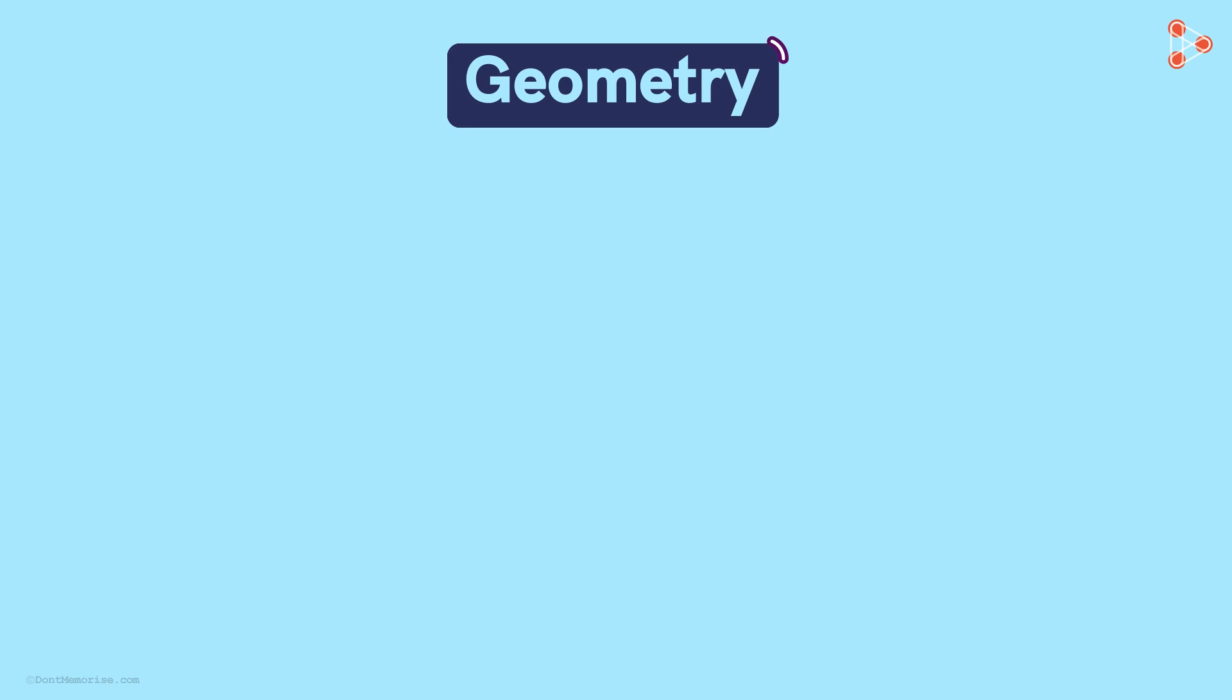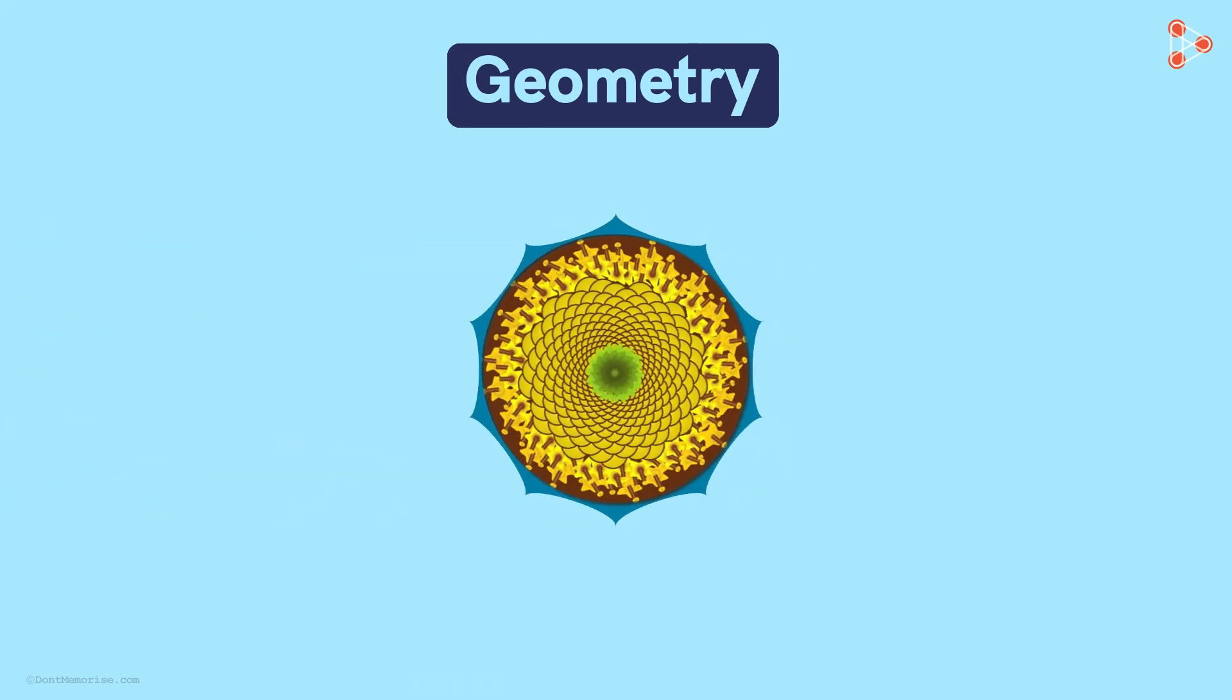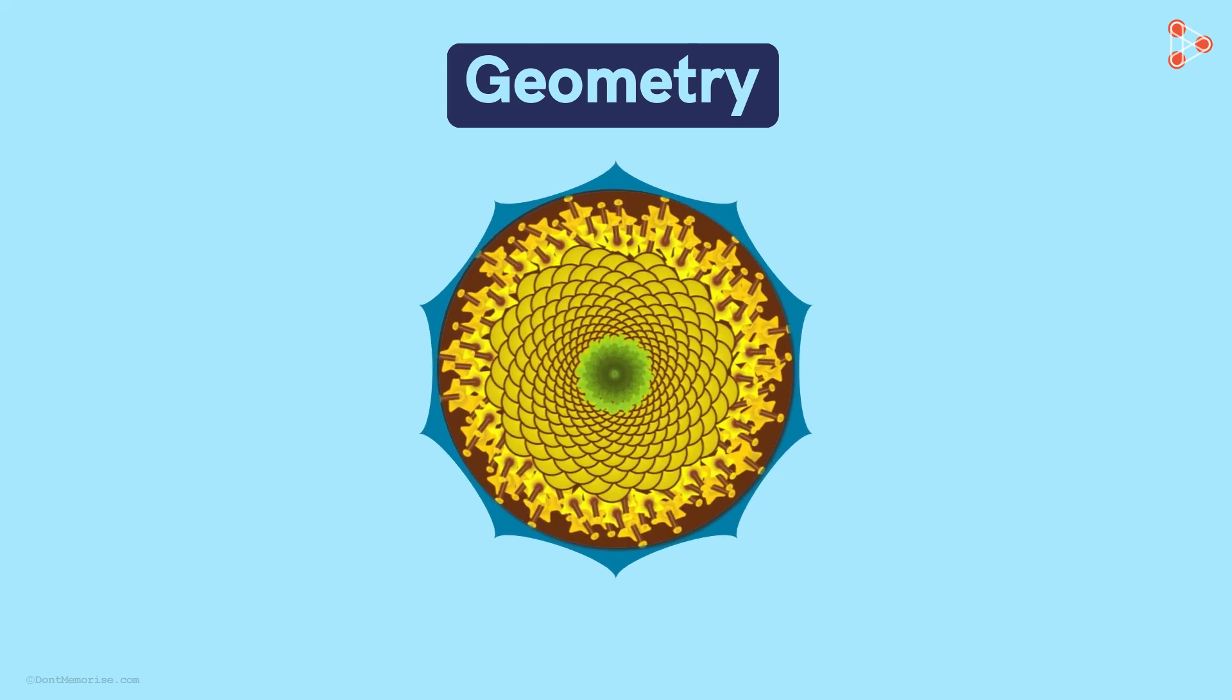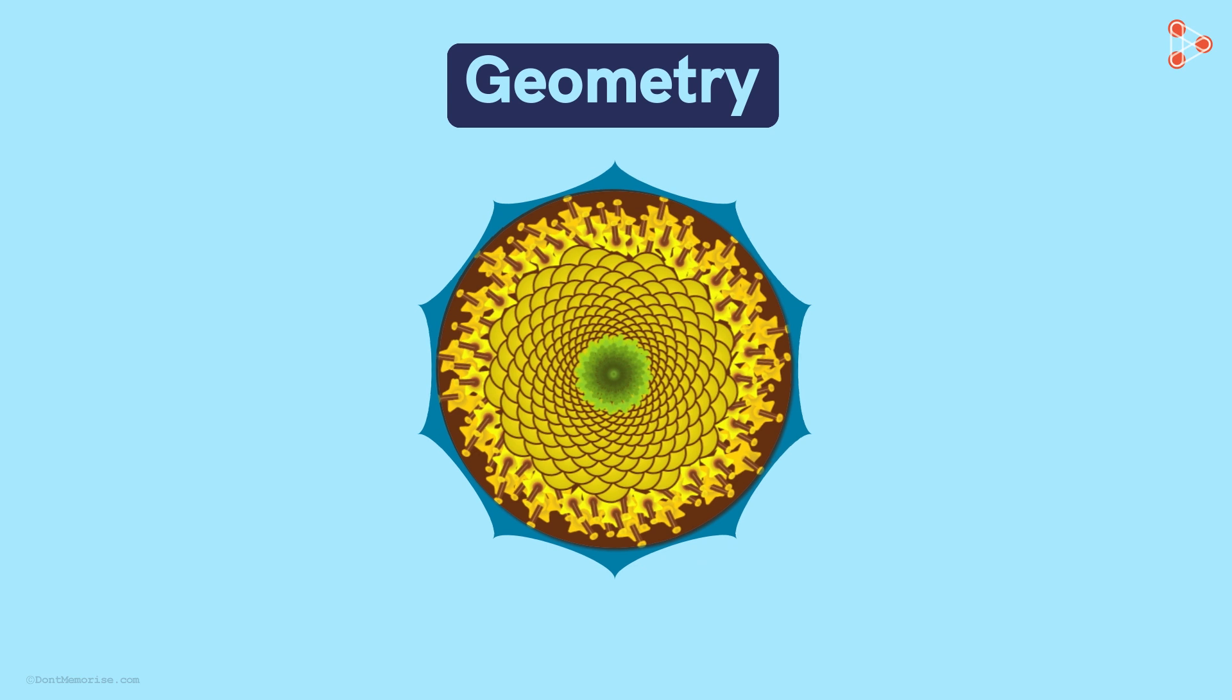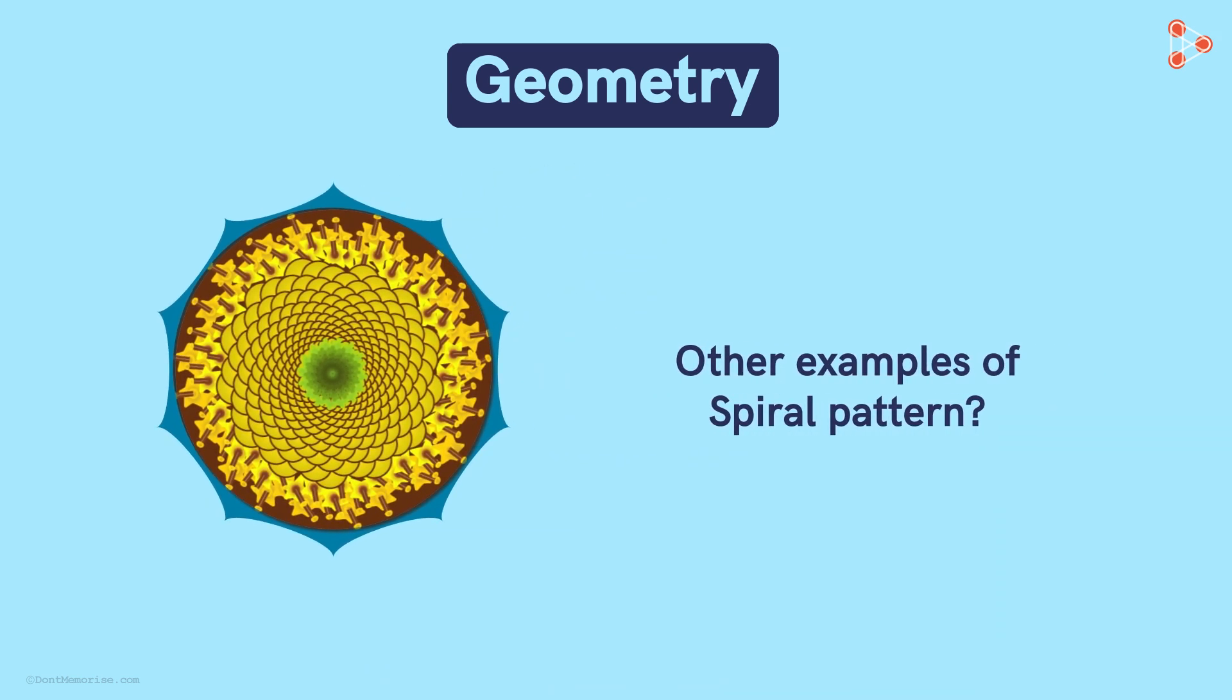Geometry is hidden in natural patterns too. Have you noticed the seeds in a sunflower? If you look closely, they form a spiral-shaped design. Do you know any other examples where you notice a spiral pattern?